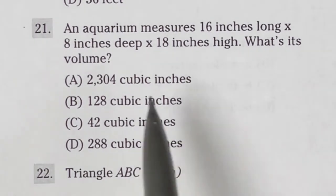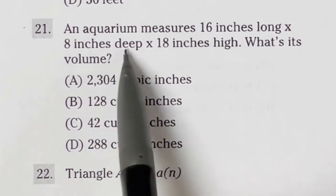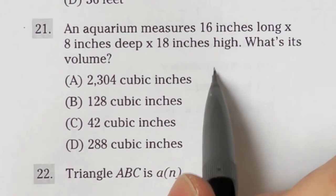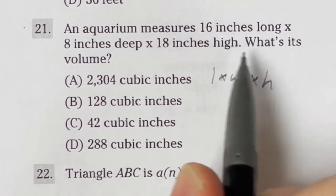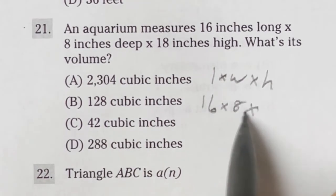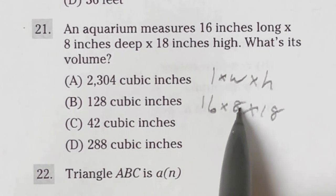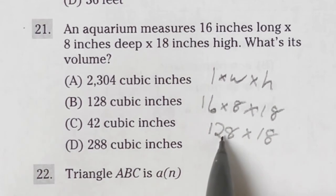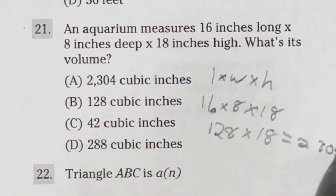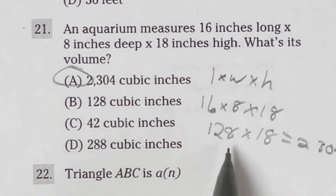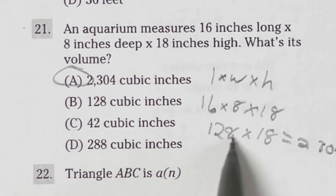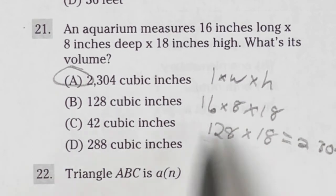Number 21 on the ASVAB mathematical knowledge is saying that an aquarium measures 16 inches long, 8 inches deep, and 18 inches high. What's the volume? Well, you just need to remember that for a rectangular prism, the volume is going to be your length times width times height. So in this case, that means we're going to be doing 16 times 8 times 18. Now, if you didn't know, 16 times 8 would be our starting point, and that's going to give us 128. We then have to multiply that by our 18. So doing this the long way out, let's see if I did it by 20 and subtracted two of those, that's going to end up giving me 2304, which is option A. You should have been able to get that pretty easily, though, just by guessing once you got to this point, because obviously 128, 42, and 288 are way too small to be the answer to this guy right here. So answer A is your final.